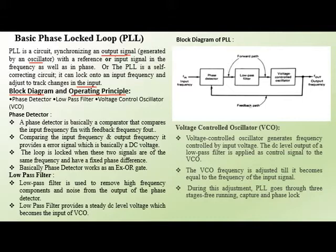In the phase detector, it is basically like a comparator. It compares the input frequency F-in with the feedback frequency F-out. This comparison provides an error signal E at the output of the phase detector. The error signal is basically in the form of a DC voltage. When the loop is locked, these two signals are at the same frequency and their phase difference is fixed. The phase detector can also work as an XOR gate.